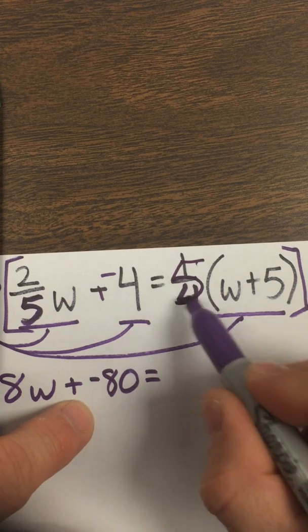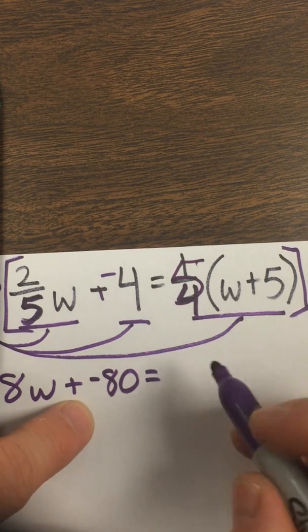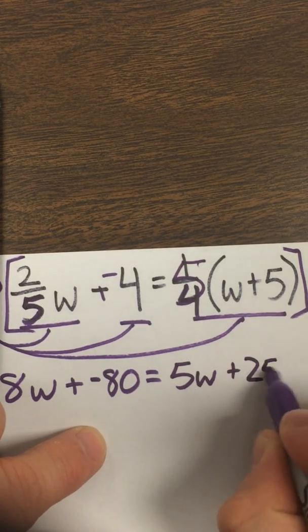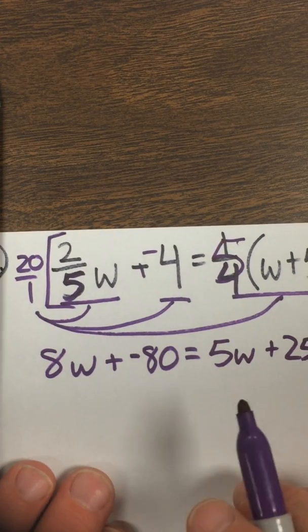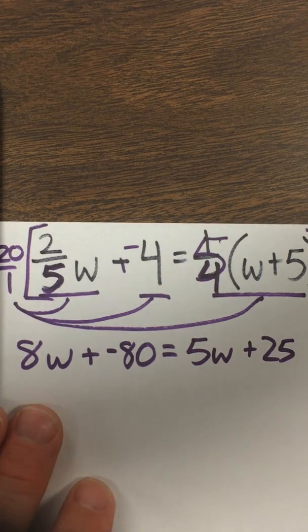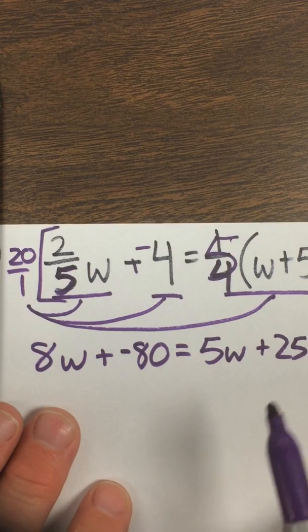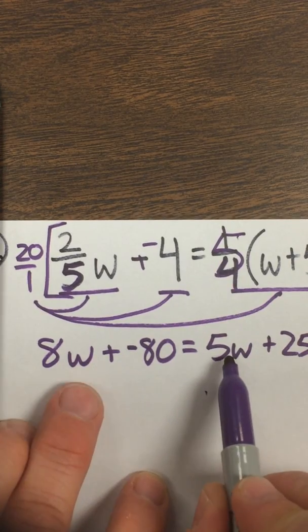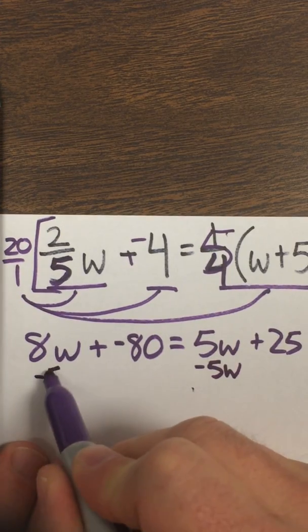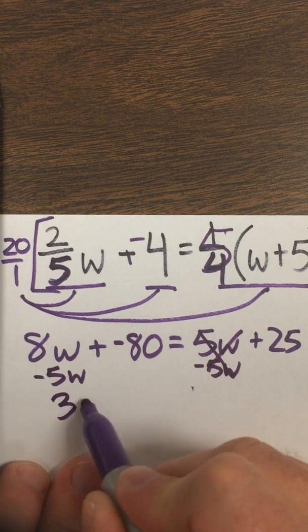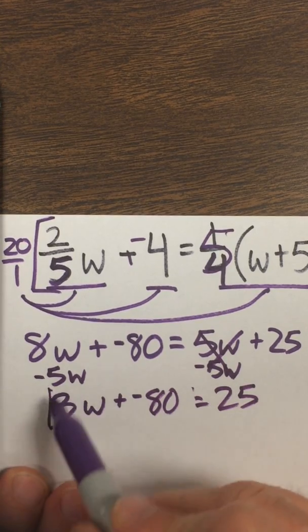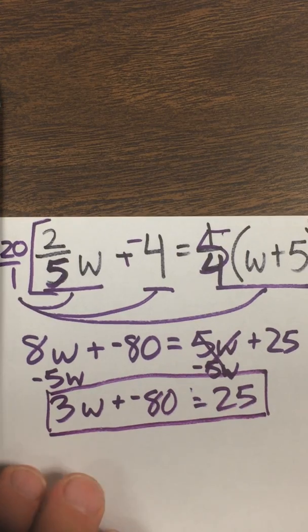Now I could go ahead and distribute: 5 times w equals 5w, and 5 times 5 is 25. Now I have variables on both sides. I want to get rid of one of these sets, so I'm going to subtract 5w and do it to both sides to cancel out. Over here I'm left with 3w. I still have this negative 80, and it equals 25. And finally we're in a two-step algebraic equation, which means now we can solve it.